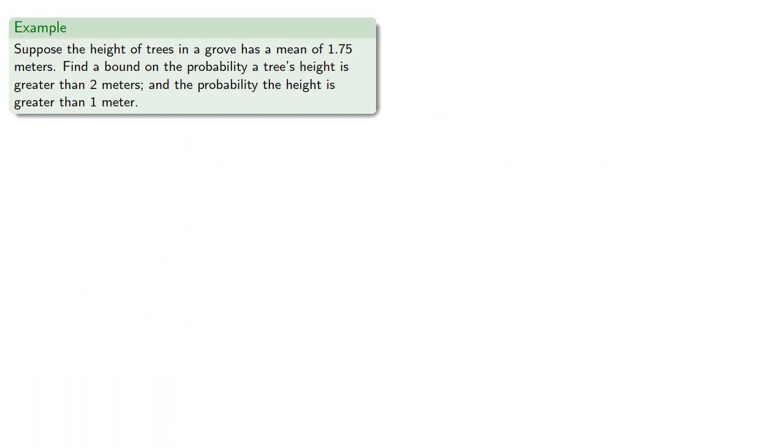So for example, suppose the height of trees in a grove has a mean of 1.75 meters. Let's find a bound on the probability a tree's height is greater than 2 meters. And how about the probability the height is greater than 1 meter?